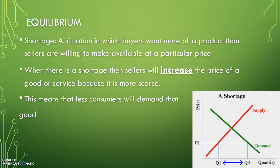A shortage is a situation in which buyers want more of a product than sellers are willing to make available at a particular price. When there is a shortage, sellers will increase the price of the good or service because it is more scarce, which means less consumers will demand that good. A shortage is anything below equilibrium price. Looking at the graph, there's more quantity demanded than there is supplied at that price point.